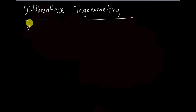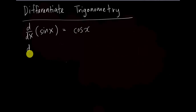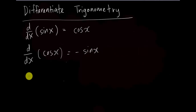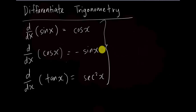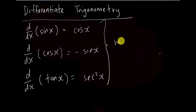First, let us know: when we differentiate sin x, we get cos x. If we differentiate cos x, we get negative sin x. And if we differentiate tan x, we get sec² x. These three you have to memorize. You differentiate sine, you get cos. You differentiate cos, you get negative sine. You differentiate tangent, you get sec² x.